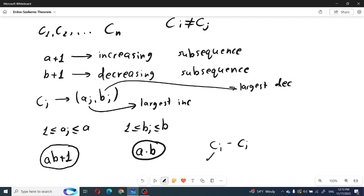where the pair for C_i, (a_i, b_i), will be equal to (a_j, b_j).